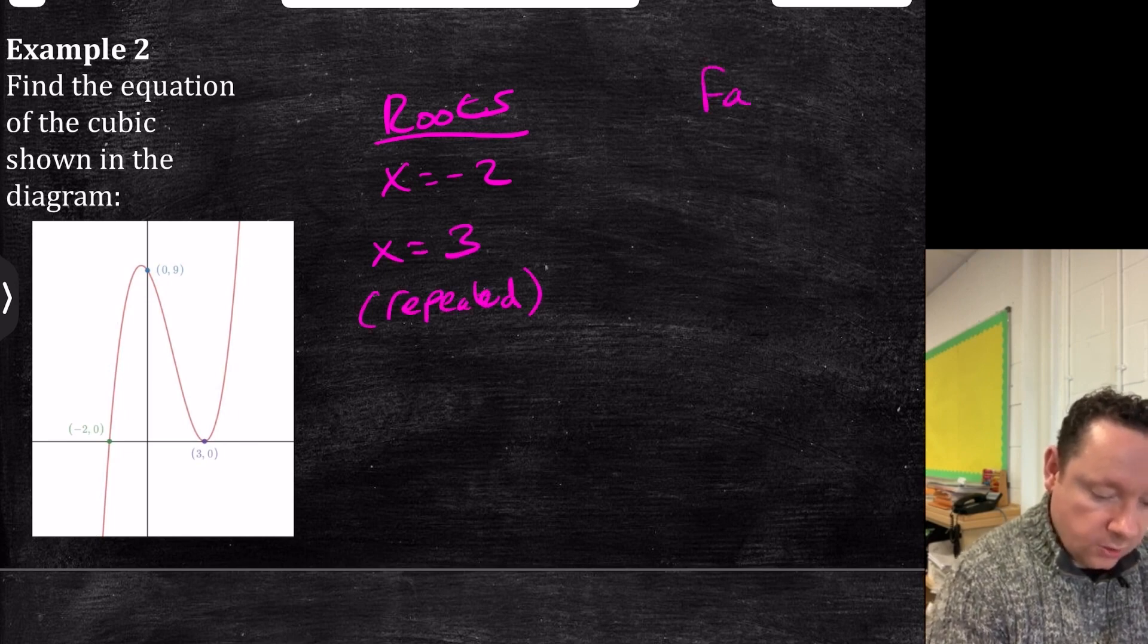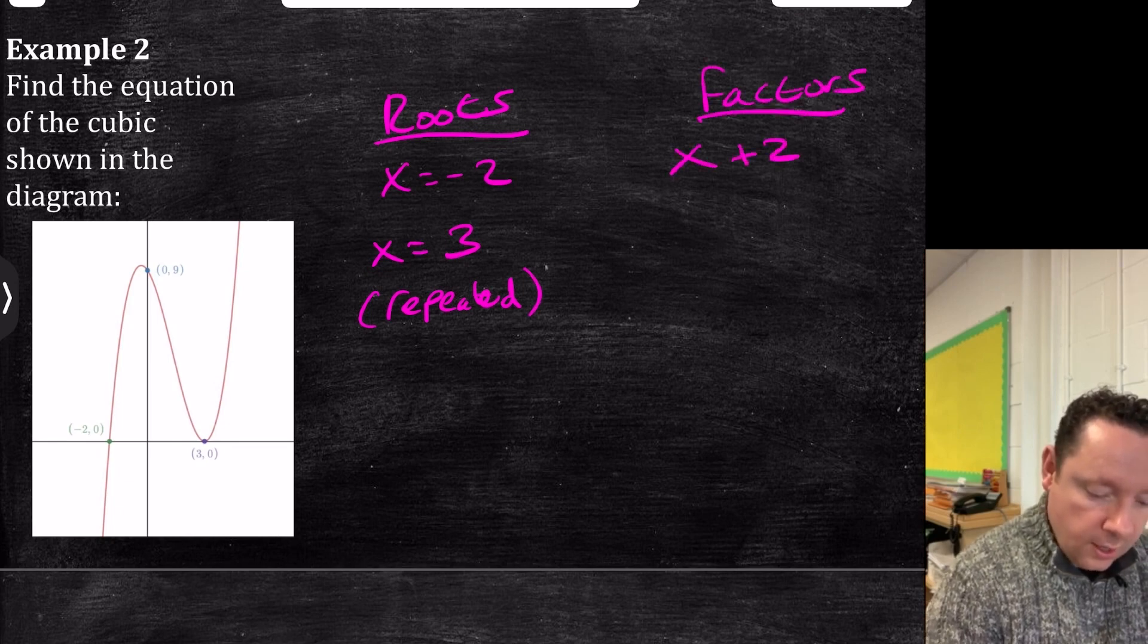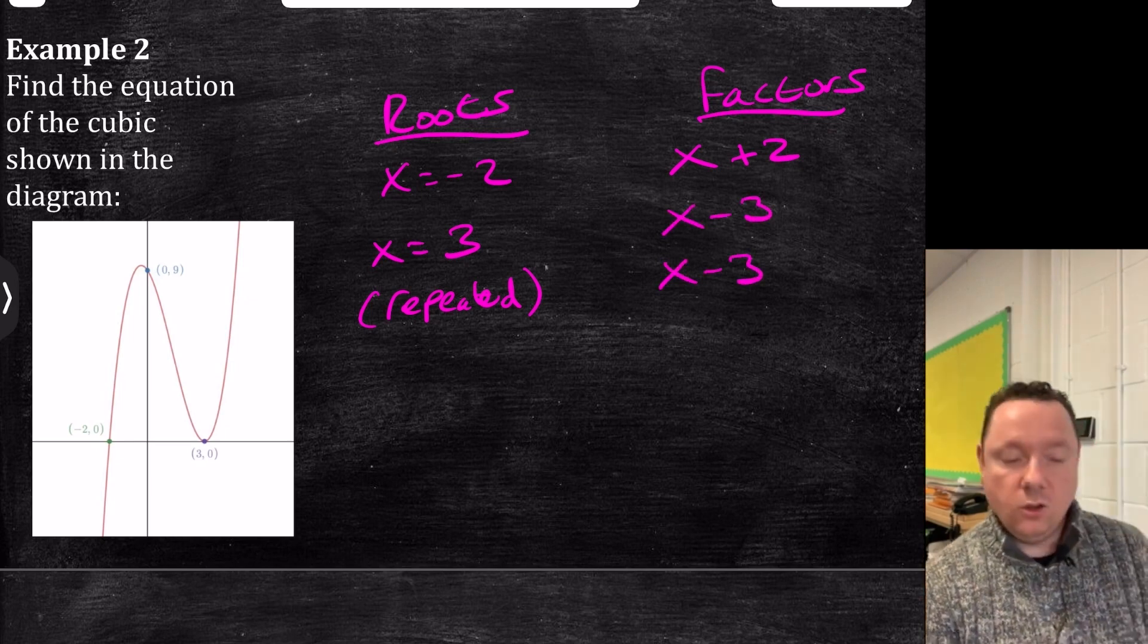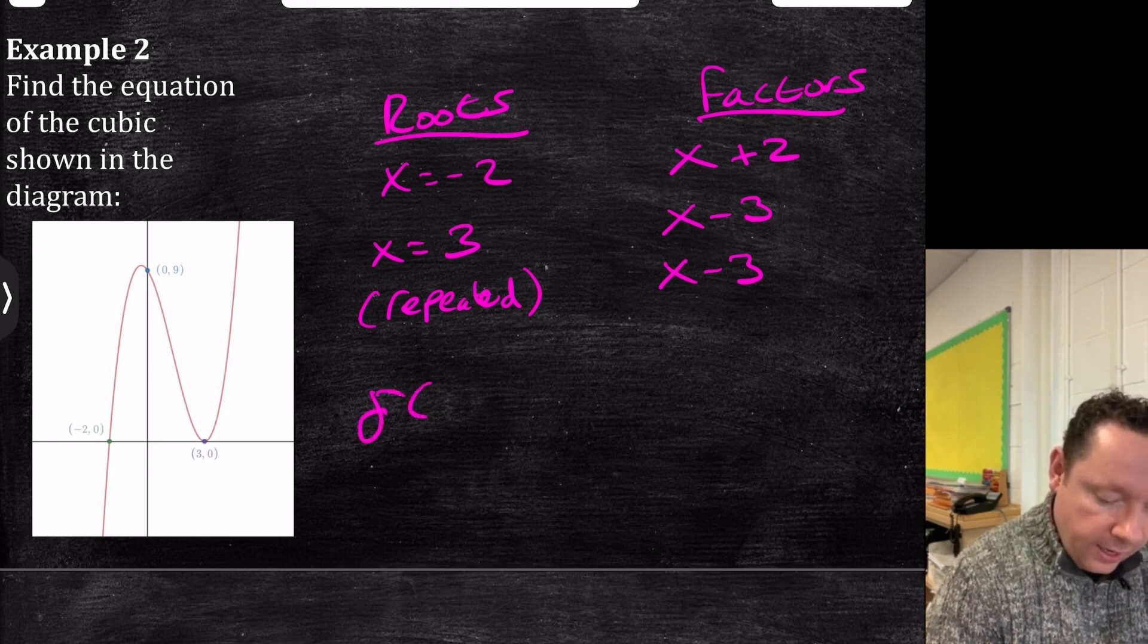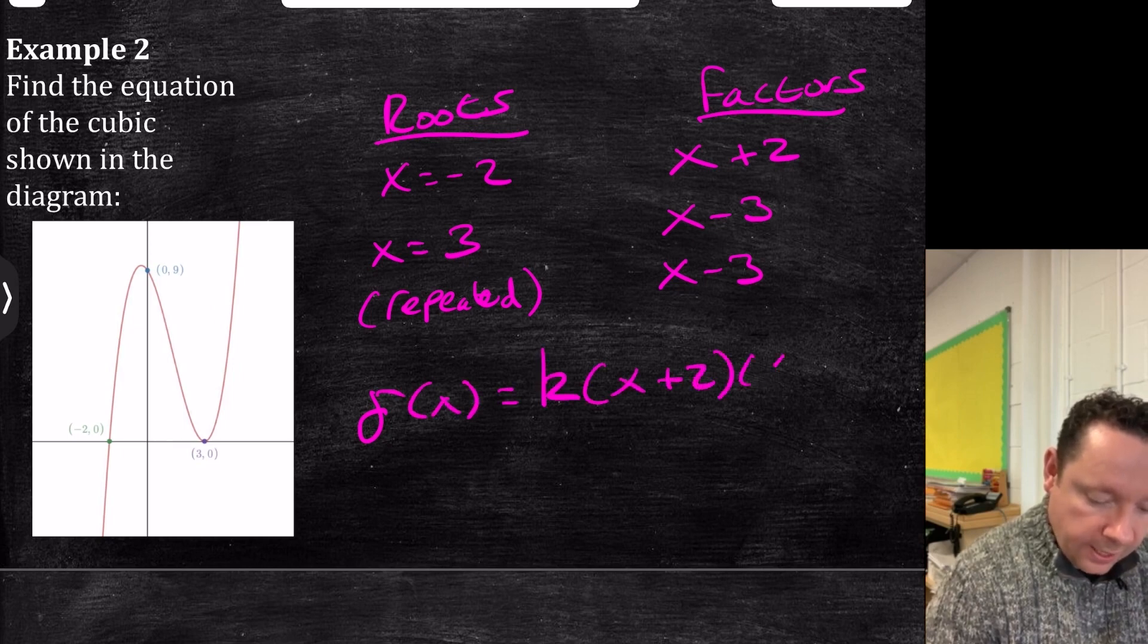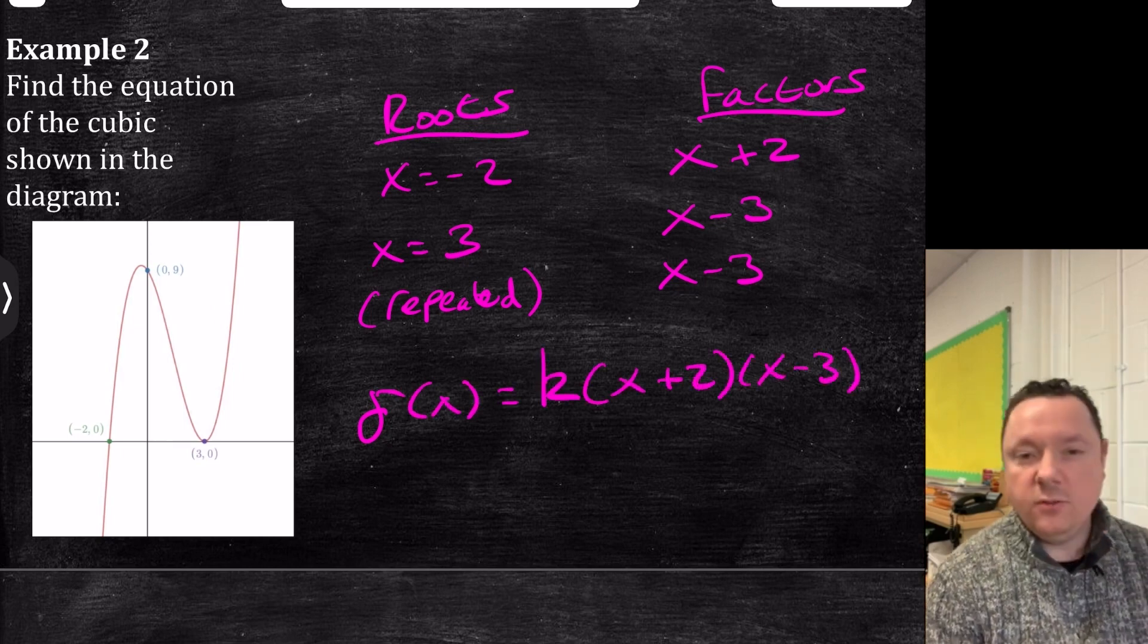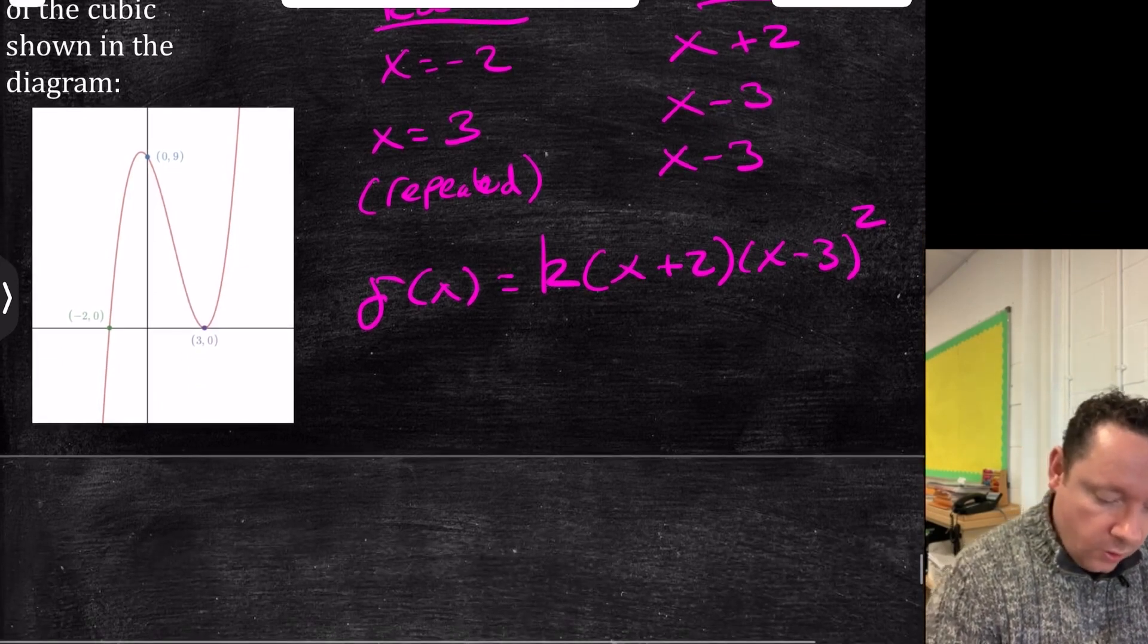So that means our factors are x plus 2, x minus 3, and x minus 3 again, because it's a repeated root, because it's a turning point, right here. So we can now say straight away that f of x is equal to k, some number, times x plus 2, times x minus 3. And you can write x minus 3 again, or we can have x minus 3 squared. Now we can just sub in our point.